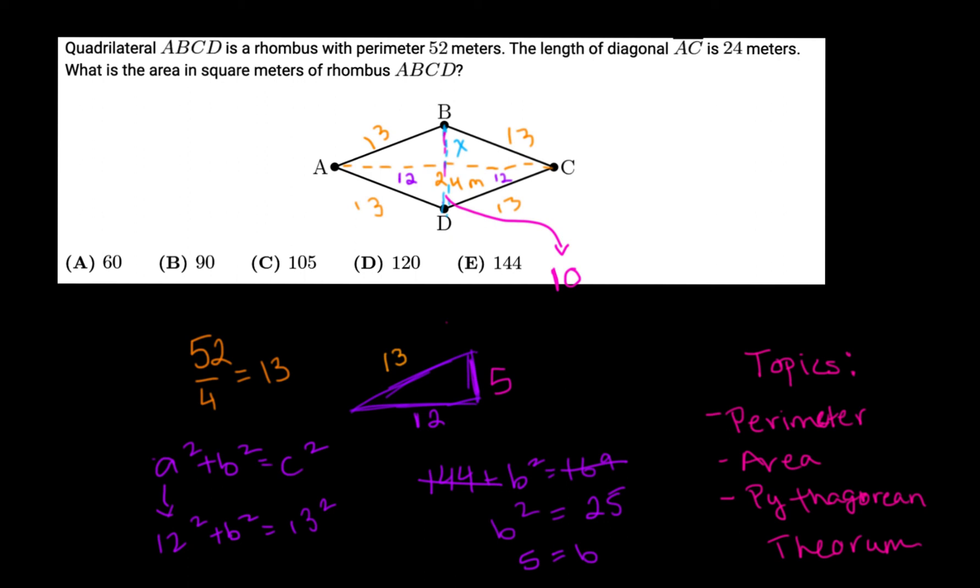The formula for finding the area of a rhombus is diagonal 1 times diagonal 2 divided by 2. We have both diagonals now. BD equals 10, and AC equals 24.